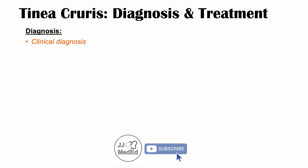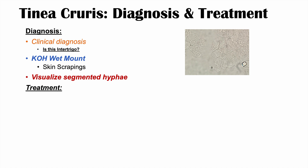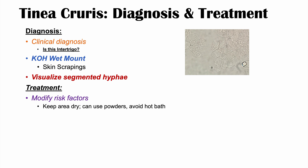Diagnosis of tinea cruris or jock itch is often a clinical one — we look at the skin lesion and risk factors to make the determination. We always have to consider whether it could be intertrigo. We could also do a KOH wet mount of skin scrapings to visualize segmented hyphae, confirming a fungal infection. Treatment involves modifying risk factors: keeping the area dry using powders, avoiding hot baths, and treating concomitant tinea pedis or onychomycosis, since auto-infection is common.